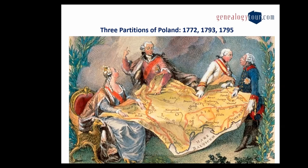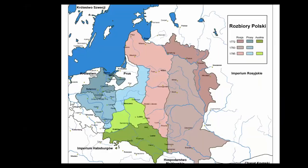On screen you can see a comic picture of that situation. We have the Emperor of Russia, Catherine II; the ruler of the Holy Roman Empire, Emperor Joseph II; the King of Prussia, Frederick II; and the Polish king who had already lost his crown. This was the end of Poland for 123 years. When we look at the map of these partitions, people often ask what these three partitions actually were.